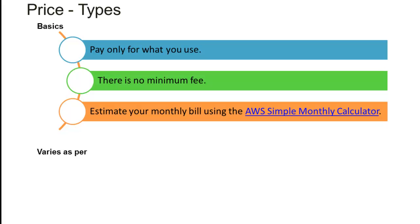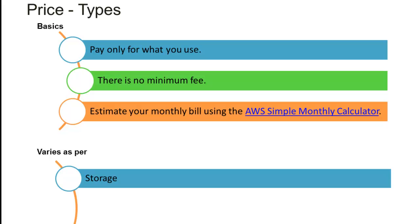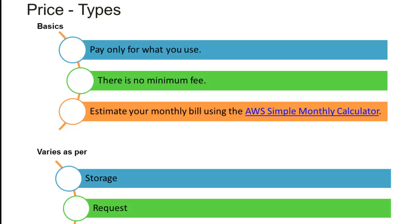Pricing varies on a few factors. First is the amount of storage — how much data you are storing in S3 across various buckets. The second parameter is how many HTTP or HTTPS requests you are making through REST and SOAP interfaces to your S3 buckets from outside. The third parameter is how much actual data you are transferring in or out of S3 buckets. These three parameters — storage size, HTTP requests, and data transfer — determine your S3 pricing.